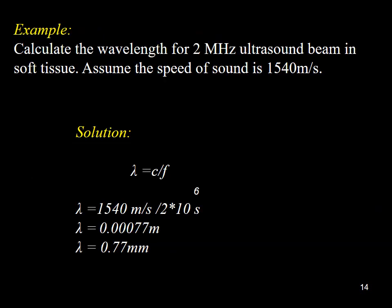For example, calculate the wavelength of a two megahertz ultrasound beam in soft tissue. Assume the sound speed is 1540 meters per second. We use the mathematical relationship between the speed of sound, frequency, and wavelength to answer this question. Because wavelength equals the speed of sound divided by the frequency, by directly applying the law, we will arrive at a solution.